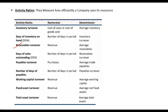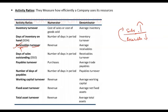Moving on to receivables turnover — again, 'turnover' in the name means some kind of sales in the numerator and receivables in the denominator. For receivables, the aligned quantity is sales and not cost of goods sold, because receivables arise from the sales you have made. If receivables turnover is higher, that means receivables are less relative to sales, meaning your customers are paying faster, which is good for your working capital and cash cycle.